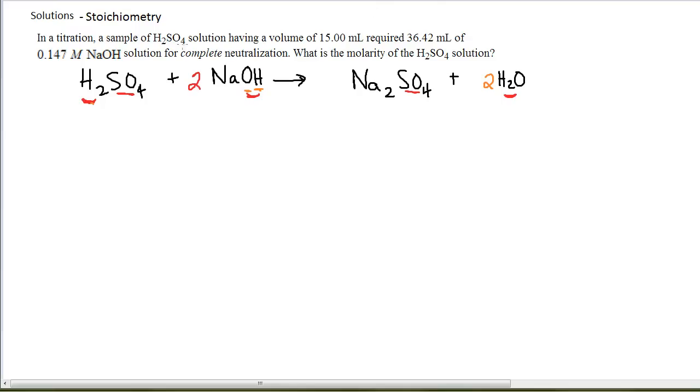Let me write my information from the question. A titration, a sample of H₂SO₄ having a volume of 15.00 milliliters. That's my H₂SO₄. Required, starting here, the 36.42 milliliters of the sodium hydroxide. That's all about my sodium hydroxide solution. So I'll write that here. And the question is, what is the molarity of the H₂SO₄? In this solution stoichiometry problem, I am given everything about the sodium hydroxide solution. And I'm trying to find something about the sulfuric acid solution. So this is a solution to moles, moles to moles, moles to solution. My starting point and my ending point is the solution.